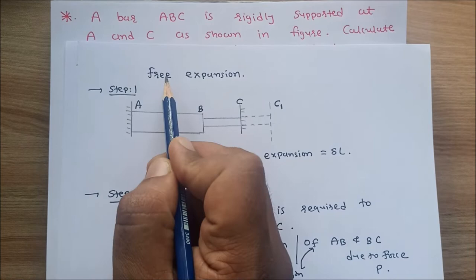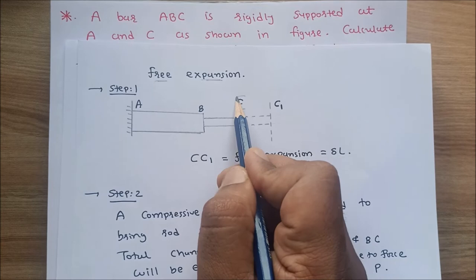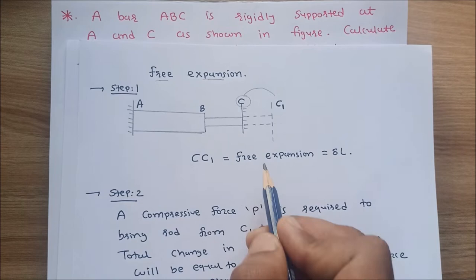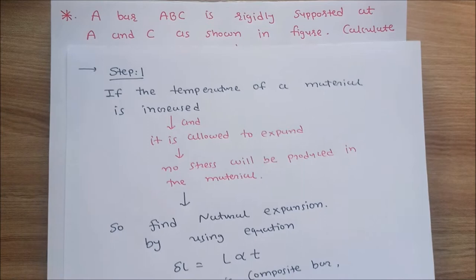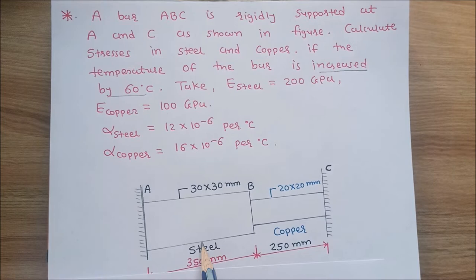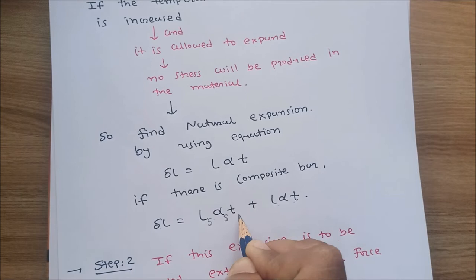The expansion of this composite bar from C to C1 is the free expansion. So C-C1 equals free expansion, which equals delta L. In our first step, we find delta L = L·alpha·T + L·alpha·T. Since our question has two components — steel and copper — we write: delta L = L_s·alpha_s·T + L_c·alpha_c·T.